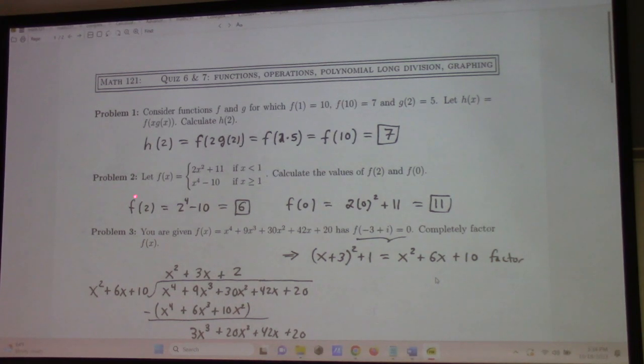Now, for problem 2, let's see here, 2 is where? It's greater than or equal to 1, so I use the second formula, right? 2 to the 4th is 16, 16 minus 10 is 6. 0 is less than 1, so I use the first formula, which gives me 2 times 0 squared plus 11, also known as 11. There's that.